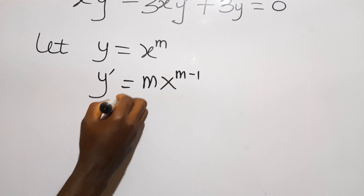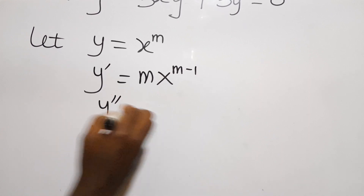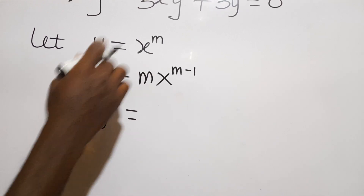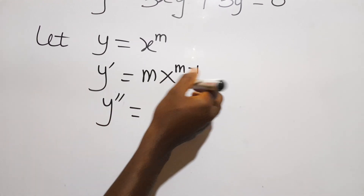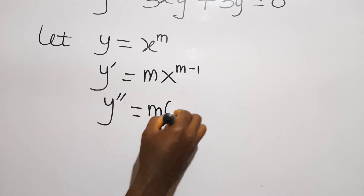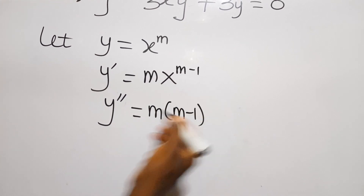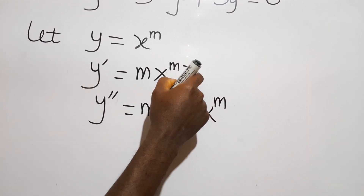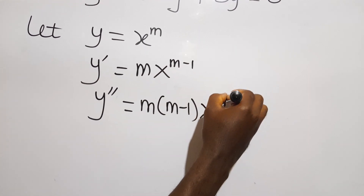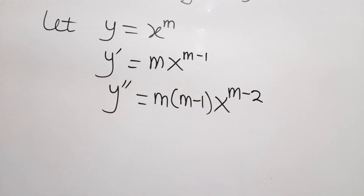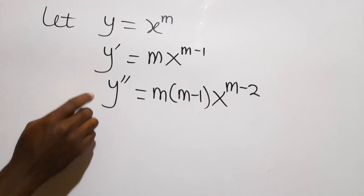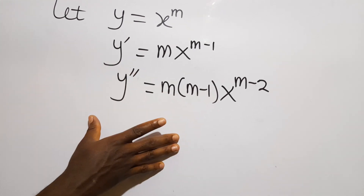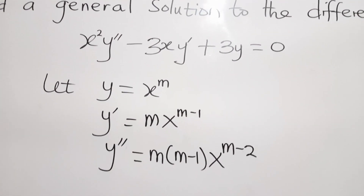Then y double-prime is obtained by differentiating the first differential. We drop the exponent again to multiply, repeat the function, and subtract one from the exponent, giving m minus one minus one equals m minus two. So y double-prime equals m(m−1)·x^(m−2). Now knowing y, y prime, and y double-prime, we substitute into our differential equation.